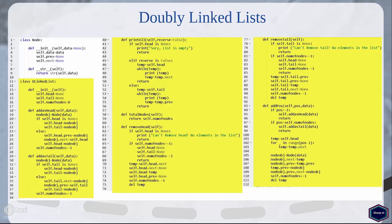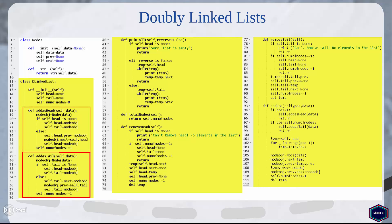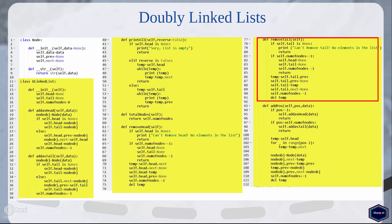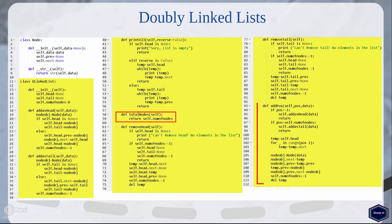I have introduced another class called DoublyLinkedList, which holds three attributes: head, tail, and number of nodes. The head attribute is used to reference the first node in the list, whereas the tail attribute is used to reference the last node in the list. The number of nodes attribute is used to count the total number of nodes in the list. My DoublyLinkedList class also contains seven different methods: add_as_head, add_as_tail, print_all, remove_head, remove_tail, total_nodes, and add_at_position.